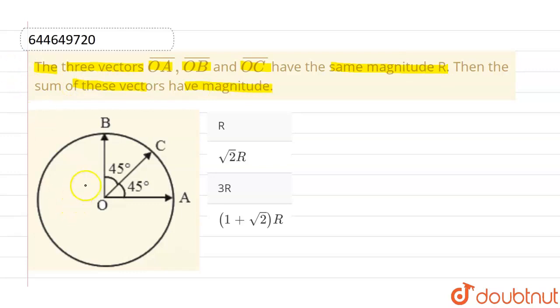Now, this one is OA vector, this one is OB vector, and this one is OC vector. The angle between OA vector and OB vector is 90 degrees, and angle between OA vector and OC vector, as we can see in this picture, is 45 degrees.